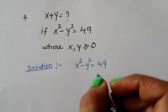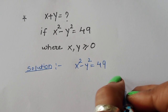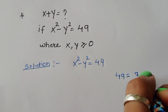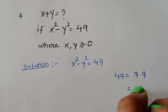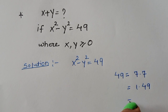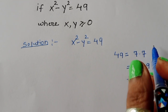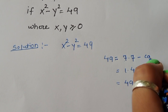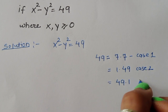When we are taking factors of 49, the factors of 49 are: 7 × 7 = 49, next is 1 × 49, and 49 × 1. So here we have three cases — Case 1 is 7 × 7, Case 2 is 1 × 49, and Case 3 is 49 × 1.